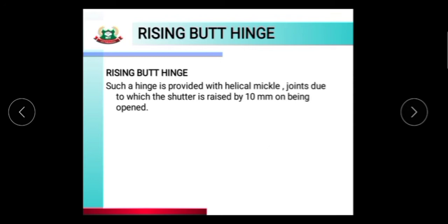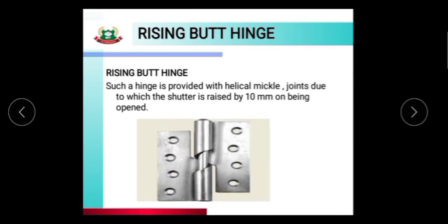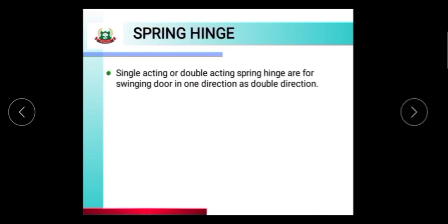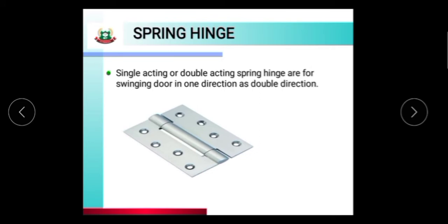The rising butt hinge is provided with helical knuckle joints, due to which the shutter is raised by 10 mm on being opened. This type of hinge is used for very heavy doors and windows. Next is the spring hinge — single acting spring hinges are for swinging doors in one direction, while double acting spring hinges allow swinging in both directions. This type of spring hinge is used for doors and windows.